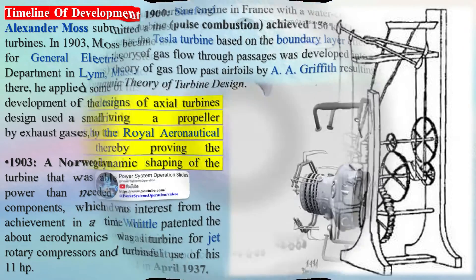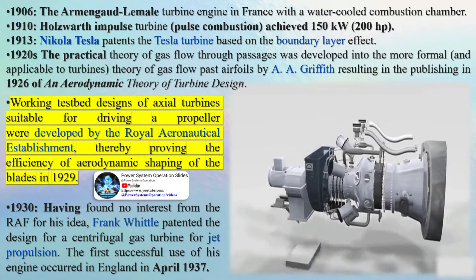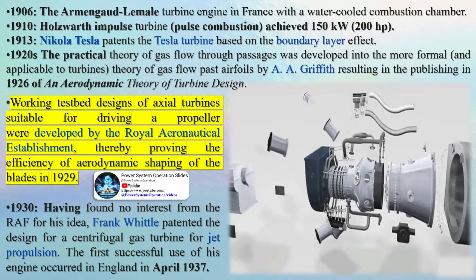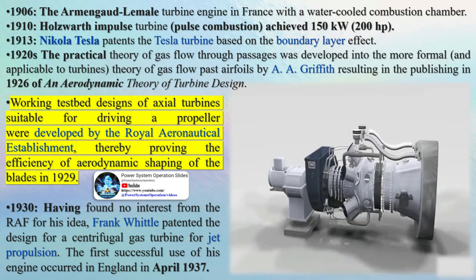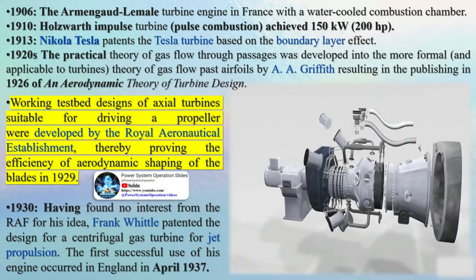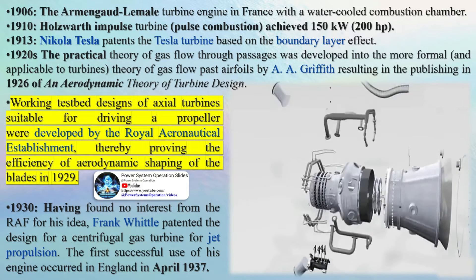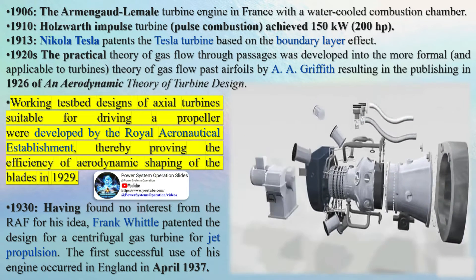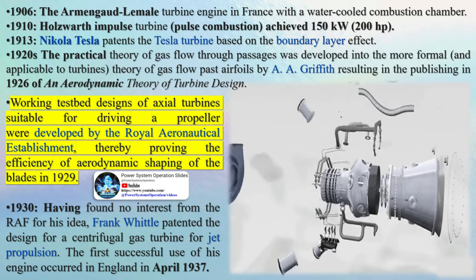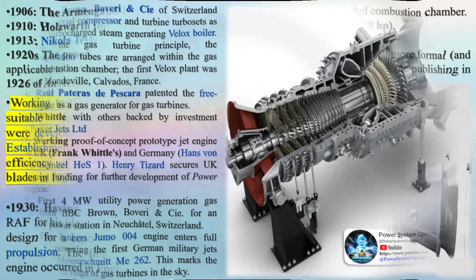In 1946, the National Gas Turbine Establishment was formed from Power Jets and the RAE Turbine Division to bring together Whittle and Hain Constance's work. In Besnon, Switzerland, the first commercial reheated recuperated unit generating 27 megawatts was commissioned. In 1947, a Metropolitan Vickers G1 Gatrick became the first marine gas turbine when it completed sea trials on the Royal Navy's MGB 2009 vessel. The Gatrick was an aeroderivative gas turbine based on the Metropolitan Vickers F2 jet engine.